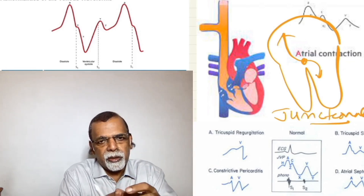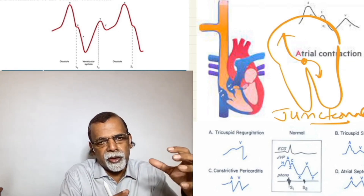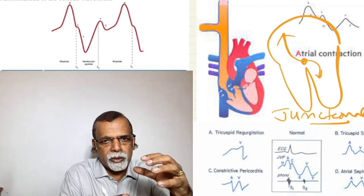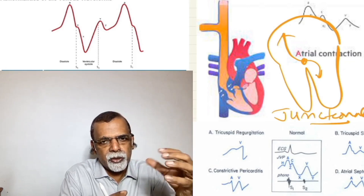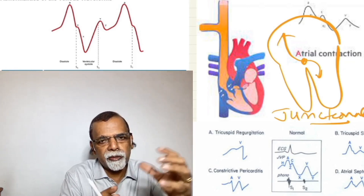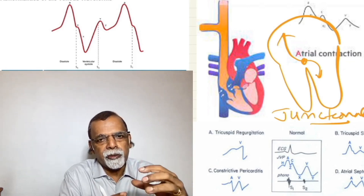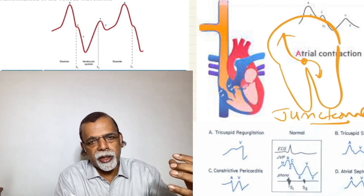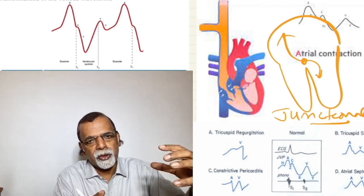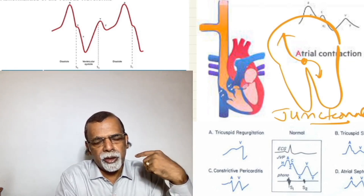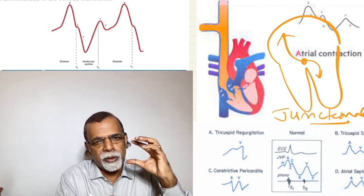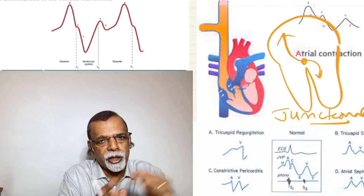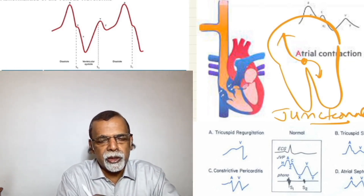In ventricular tachycardia, the atria is contracting at its own rate and the ventricle at its own rate, so again you can get cannon waves. This is one of the important findings used to differentiate supraventricular tachycardia from ventricular tachycardia. In ventricular tachycardia, you get cannon waves because the atrial rhythm is dissociated from the ventricular rhythm. In supraventricular tachycardia, the ventricular rhythm is generated from the atrium, so there will be no cannon waves. Therefore, at a fast rate, the presence of cannon waves in the neck means it is ventricular tachycardia. Cannon waves are divided into regular and irregular — the mechanism of regular cannon waves is co-contraction due to AV dissociation.